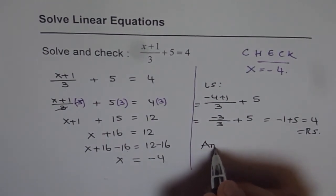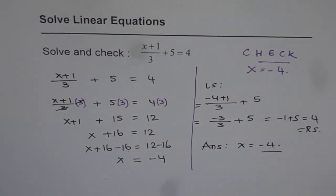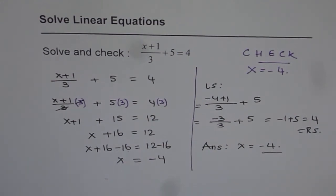Now let's write down the answer: x equals minus 4. That is how we solve and check such linear equations. The idea is, whenever you have something in the denominator, multiply all terms by the common denominator so you have a simple linear equation to solve. I hope you appreciate it. Thank you and all the best.